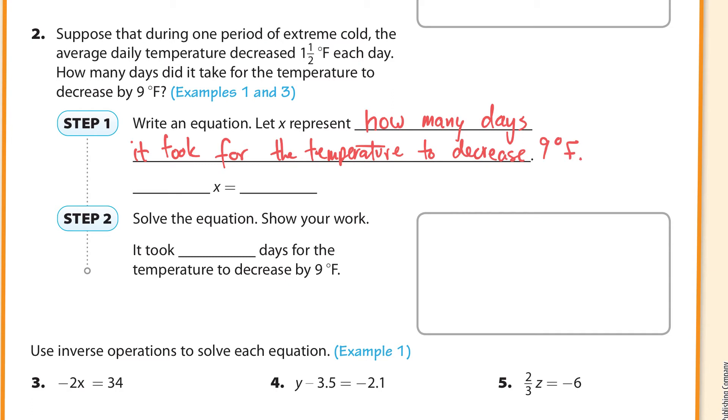So we have our 1.5 here, and I'll write 1.5. But it decreased, it decreased each day, so we have to call it negative 1.5. And then in the end, it decreased by 9 degrees, so it decreased, that's negative 9 degrees. So we're going to solve this equation. I'm going to write it here, negative 1.5 times x is equal to negative 9.